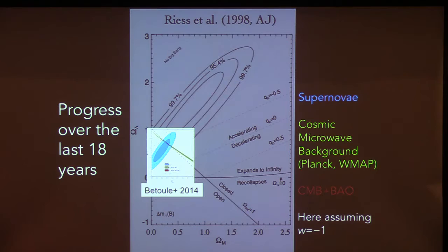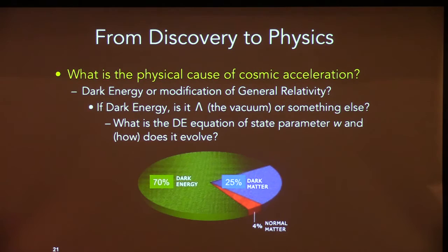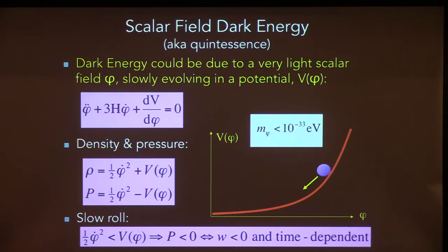The 2000s was the decade of confirmation of cosmic acceleration, capped with the Nobel Prize. Going forward, we want to ask: why is the universe speeding up? What's the physical cause of cosmic acceleration — is it dark energy, or is it something to do with gravity? If it is dark energy, is it the vacuum energy — the cosmological constant — or something else? One way to parameterize that is to ask what is the value of the equation of state parameter W, the ratio of pressure to energy density of the dark energy.